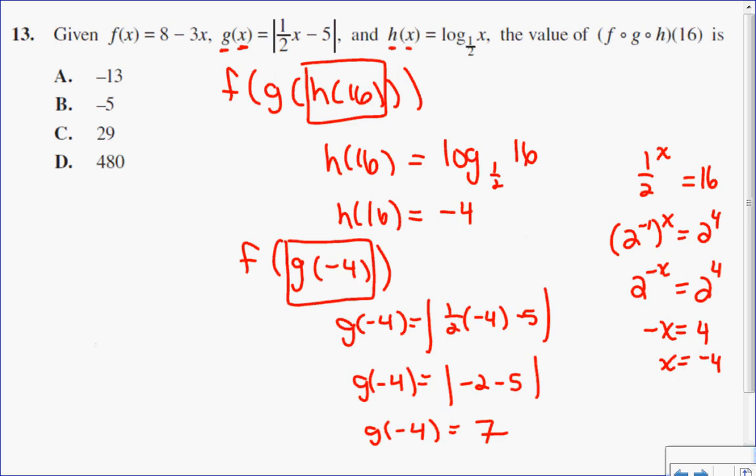instead of doing f of g of negative 4, is doing f of 7. So f tells me I'm coming up to this function. 7 tells me I'm replacing the x value with 7. So I will have 8 minus 3 times 7.